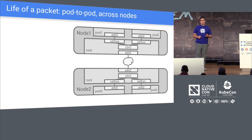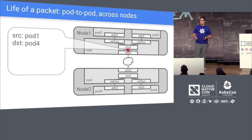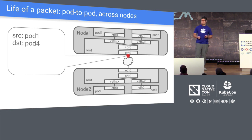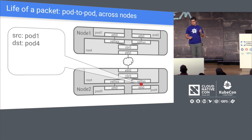Here's the life of a packet pod to pod across a node. The packet leaves pod one going to pod four on node two. Same path as before — hits the bridge, but this time it knows to go to the edge device so traffic will leave the node. It hits the network between the nodes, which has its own way of routing. Goes to the other node, hits the bridge, uses ARP and L2 to find the correct Ethernet device, traverses the pipe pair, and we're in pod four.